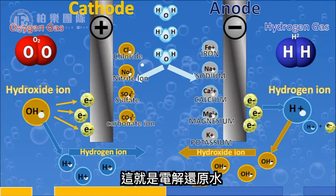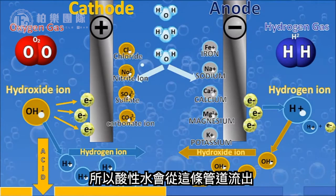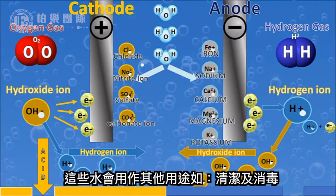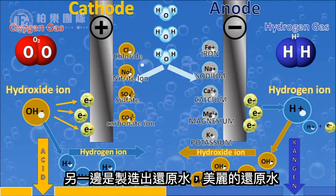When we add the hydrogen ion and the electron, this becomes a massive antioxidant — this is our electrolyze reduced water, and this is where a lot of lives end up getting changed. Down this pipe, the acidic water goes, and this is the water we use for other things like cleaning and disinfecting.